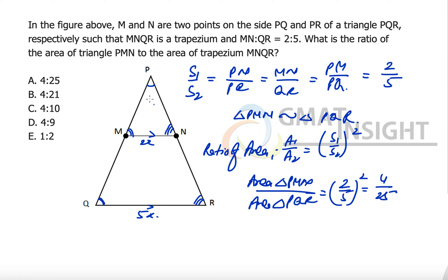Now that means if the area of this particular triangle is 4A then the area of this whole big triangle is 25A that means area of trapezium MNQR will be equal to 25A minus 4A that is equal to 21A.